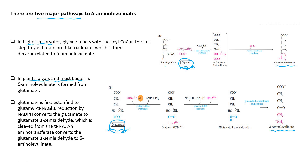In higher eukaryotes, glycine reacts with succinyl coenzyme A. When glycine reacts with succinyl coenzyme A, an intermediate is formed — that intermediate is alpha-amino-beta-keto adipate — and this reaction is catalyzed by delta-aminolevulinate synthase. From this intermediate, decarboxylation occurs: one molecule of carbon dioxide (from the carboxylic group of glycine) is released, and delta-aminolevulinate is formed. This reaction is also catalyzed by delta-aminolevulinate synthase.